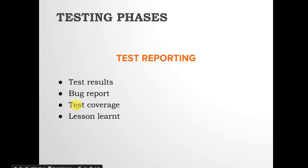Test coverage is demonstrated through the RTM or other proof showing 100% coverage of requirements. As part of test closure activities, lessons learned are documented to avoid repeating the same mistakes. Standard Operating Procedures (SOPs) are also prepared so that new joiners can follow those steps and execute testing activities.